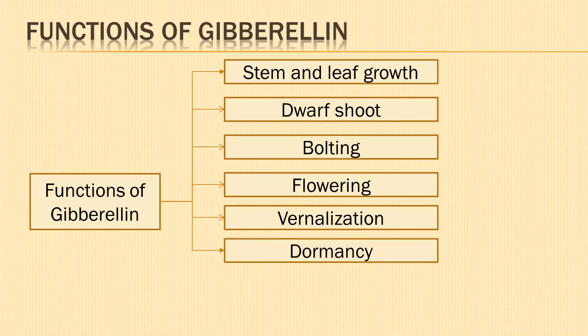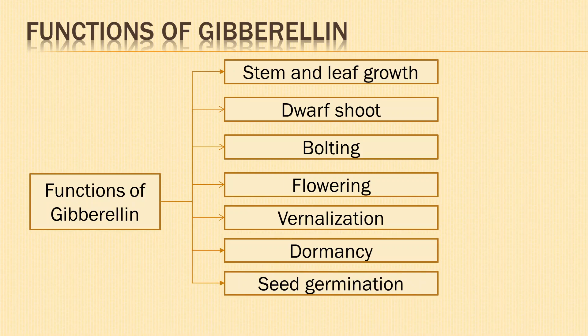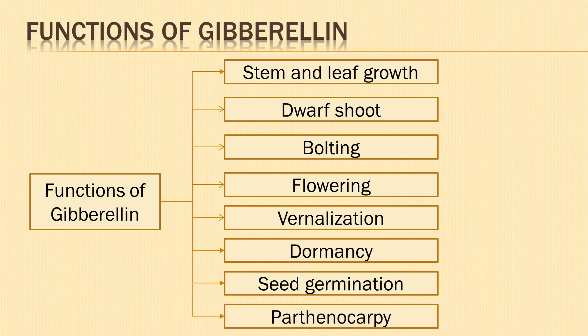Application of gibberellin to rosette plants like cabbage causes elongation of the reduced stem known as bolting. Gibberellin promotes flowering in some long-day plants under short-day conditions. The vernalization or cold treatment requirement of some plants can be overcome if gibberellin is provided. Natural dormancy of buds, tubers and some seeds is overcome by gibberellin. Gibberellin stimulates the formation of hydrolytic enzymes which solubilize reserve food and transport it to the embryo. External application of gibberellin induces development of seedless or parthenocarpic fruits.